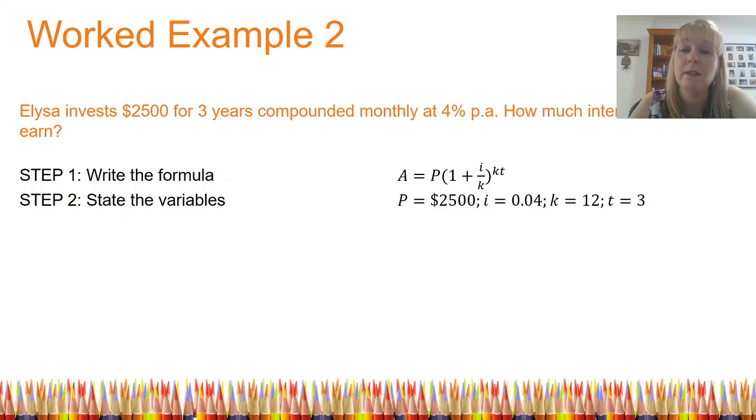I'm going to state my variables. The principal is $2,500. i is equal to 0.04. That's the 4% divided by 100 to calculate a decimal. K is the number of compounding periods in one year. Well, there's 12 months in a year. It's compounded monthly. So K is 12. And t is the number of years, which is three. Now I simply substitute this into my formula.